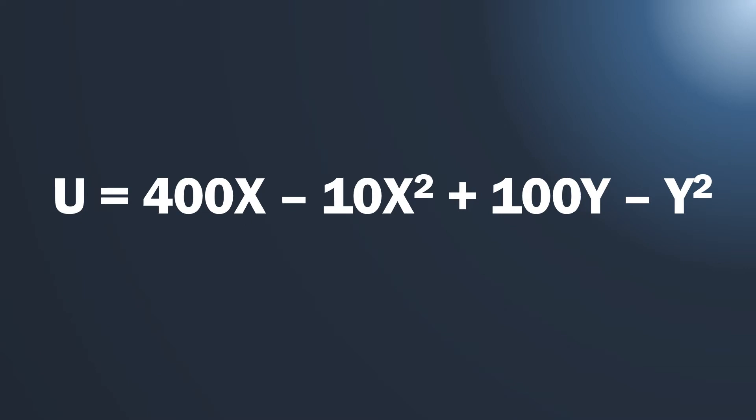The question becomes: if we have a utility function representing our consumer's preferences and we have no constraints, how do we optimize? This is unconstrained optimization. We have our preferences and there's nothing holding us back from satiating these preferences to their absolute maximum amount.